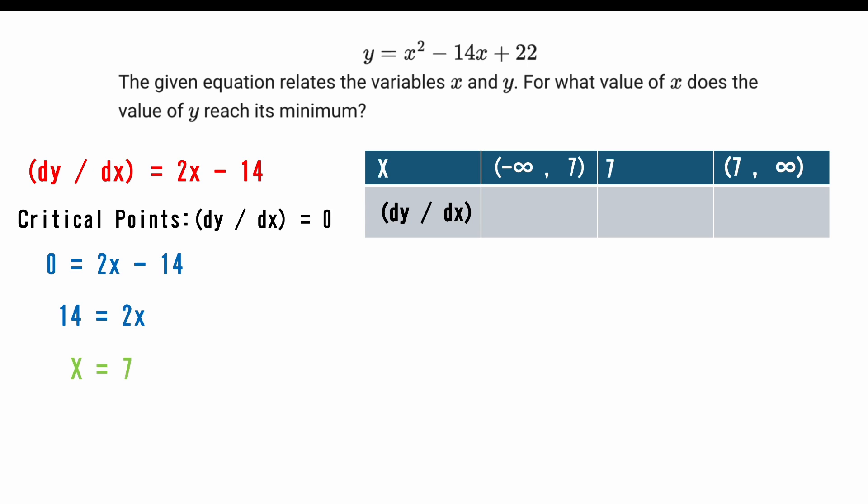First, let's take a point in between that negative infinity to 7 range, such as 6. dy/dx of 6 is going to be 2 times 6 minus 14, which is negative 2. Meaning from negative infinity to 7, the derivative is going to be negative.